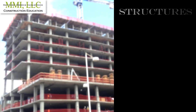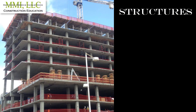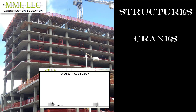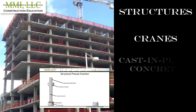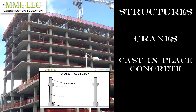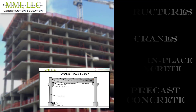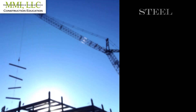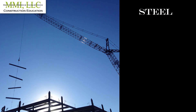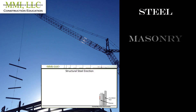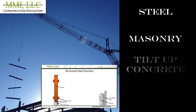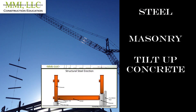The next section of the course includes the structural frame options as we rise out of the ground. We'll focus heavily on the two primary material types, concrete and steel — specifically cast-in-place concrete, precast, and structural steel. Then we'll move into other structural options: masonry, tilt-up concrete, and wood.